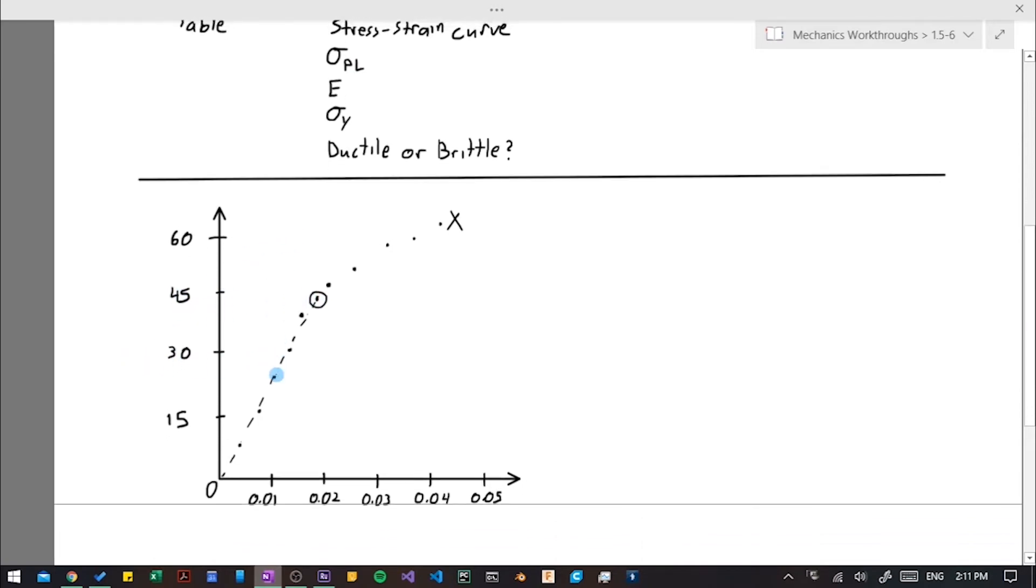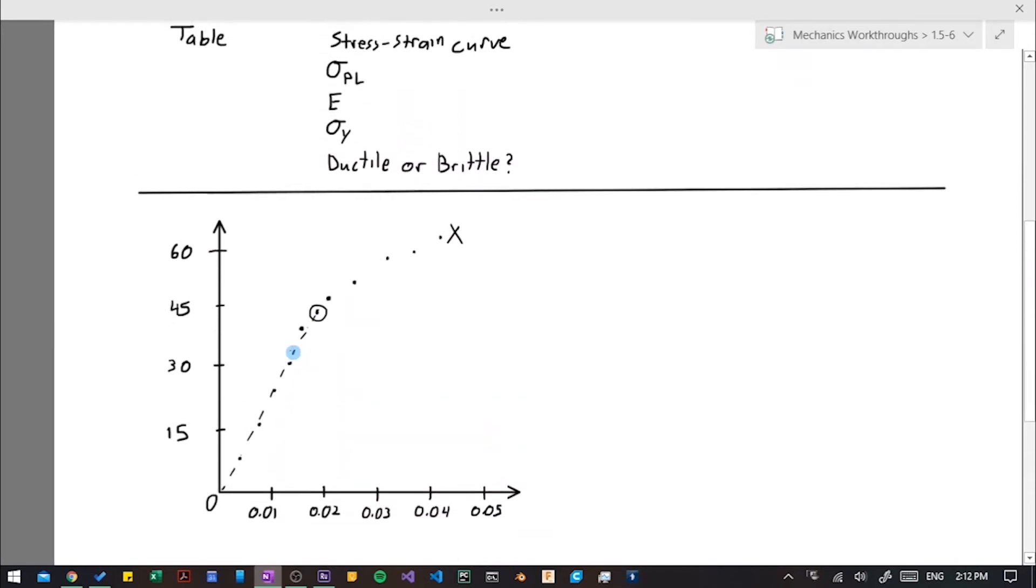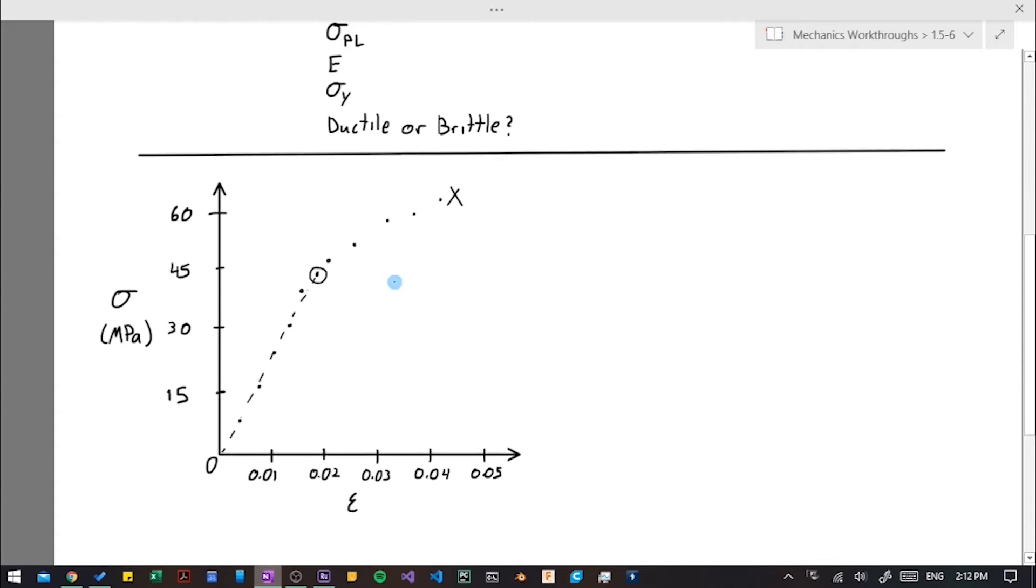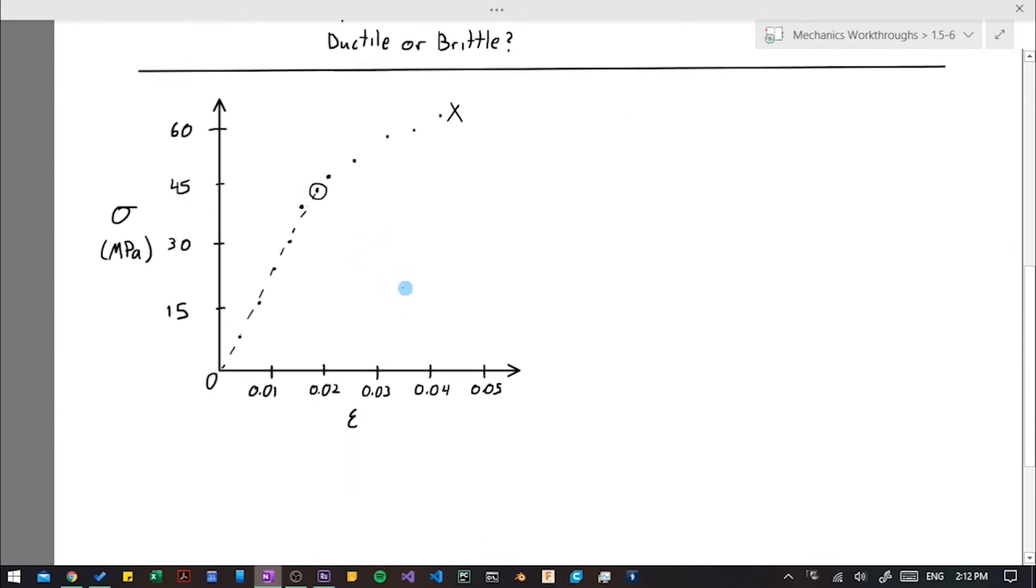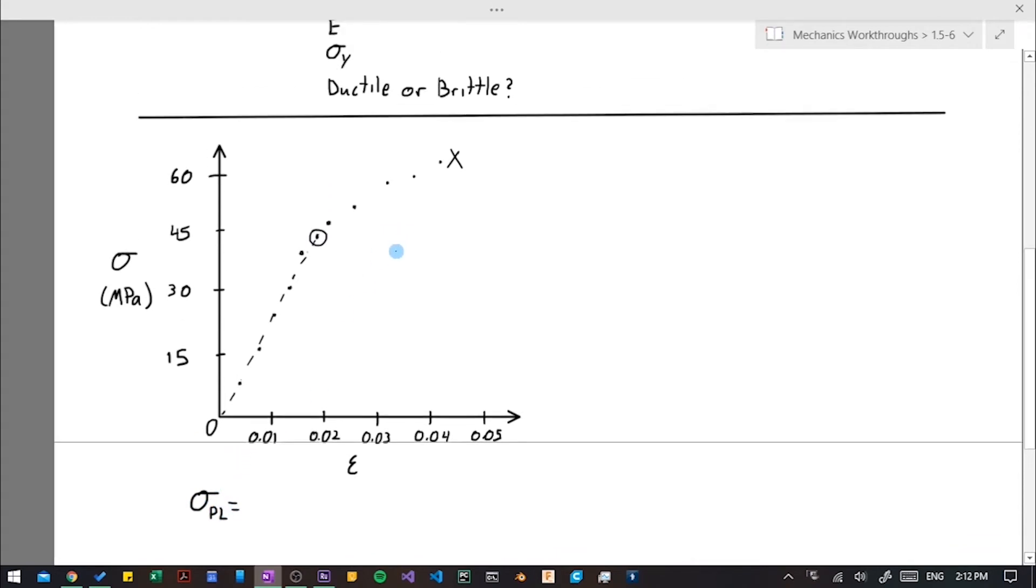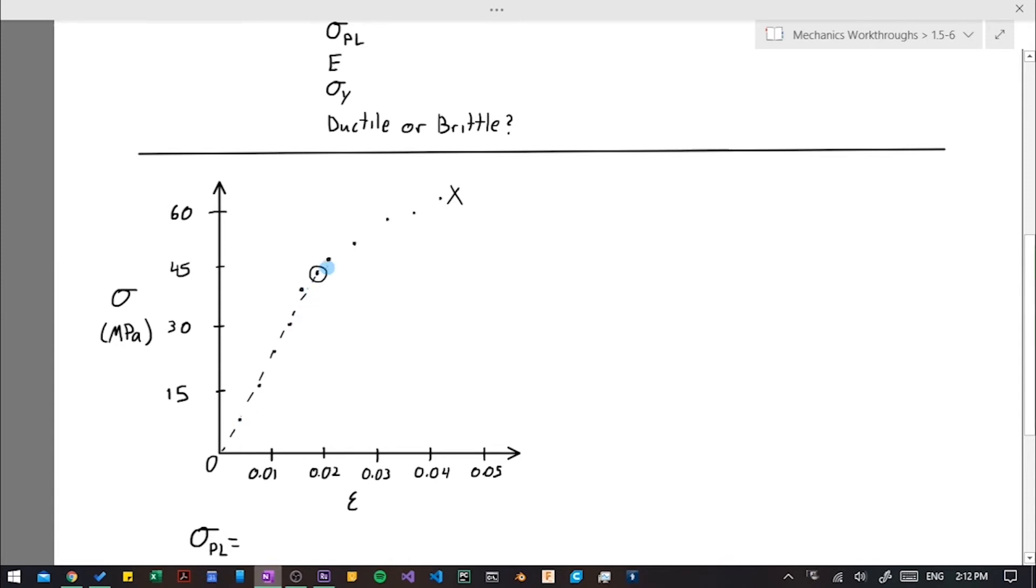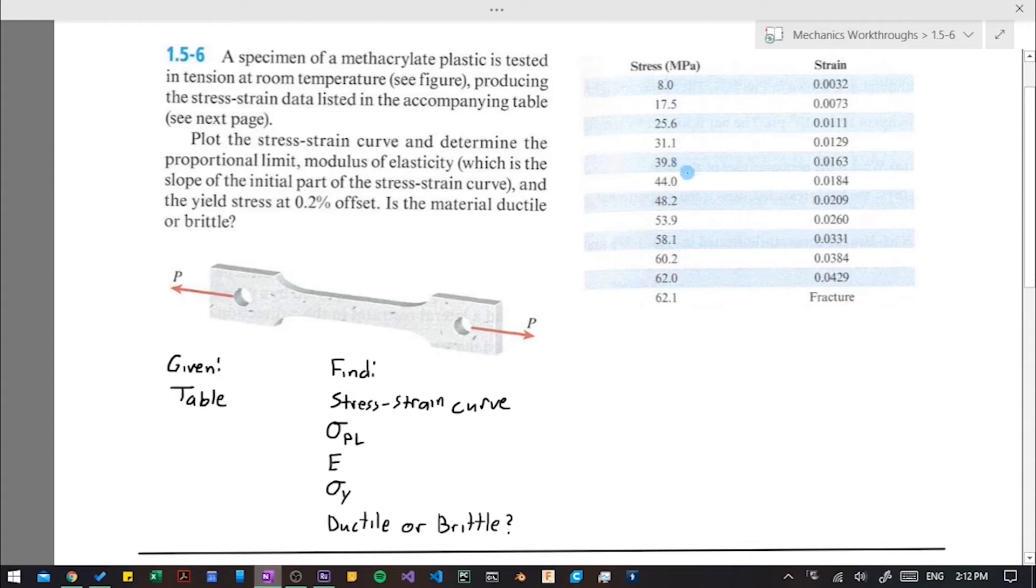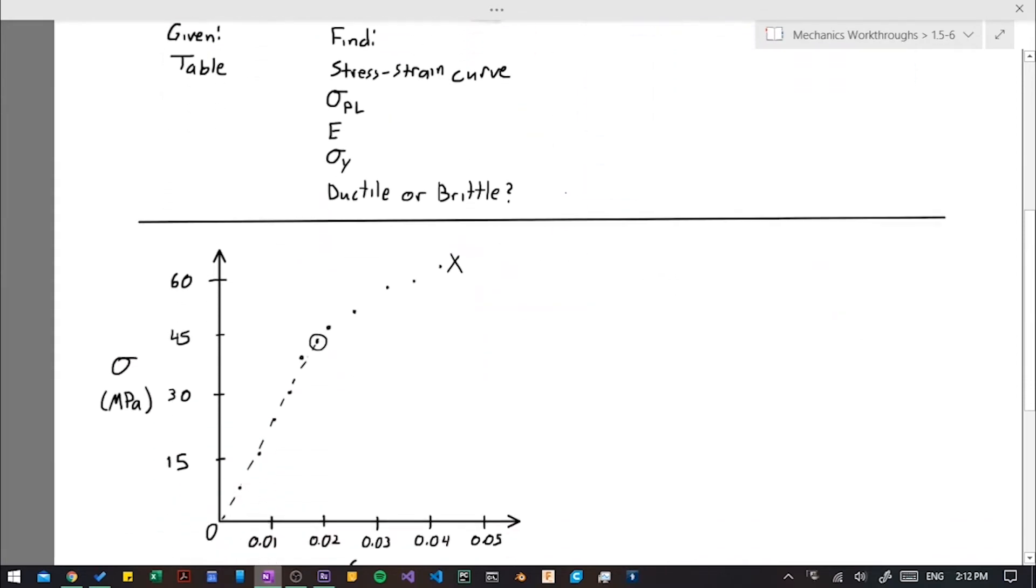And so our proportional limit is going to be the stress value. We should label our axes. And so the stress value of this point is going to be our proportional limit. And this is 1, 2, 3, 4, 5, 6. So this is going to be 44 megapascals.